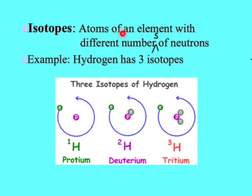Isotopes - atoms of an element with different numbers of neutrons, still the same element. For example, hydrogen has three isotopes: protium, deuterium, and tritium.